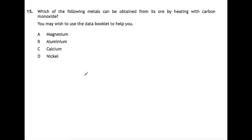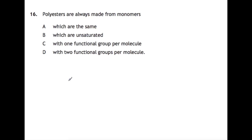Question 15. Which of the following metals can be obtained from its ore by heating with carbon monoxide? You may wish to use the data book to help you. So by looking in the data book, you can see what the order of reactivity is. So you would have calcium, magnesium and aluminium that are all very reactive and nickel is less so. So magnesium, aluminium and calcium are all extracted using electrolysis, whereas nickel could be extracted using carbon monoxide.